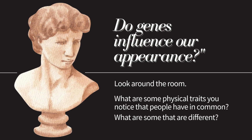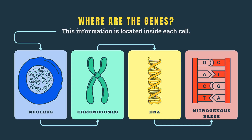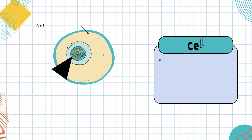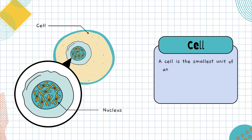The first question is: does genes influence our appearance? Look around you. What are some physical traits you notice that people have in common? What are some that are different? Where are genes located inside the cell? In this diagram, you will be able to see how the nucleus of the cell houses chromosomes that can be broken down to DNA, while DNA is composed of nitrogenous bases. Let us now explore the smallest unit of life, the cell.